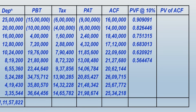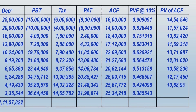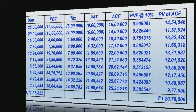Now we have to plot the present value factors at 10 percent and compute the present value of annual cash flows. The present value of annual cash flows when you total it up gives rupees 1 crore 20 lakhs 78 thousand and eight. Please write up these last two columns.